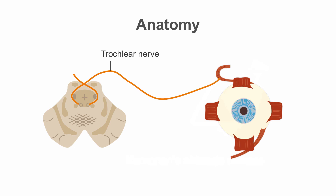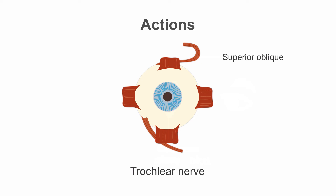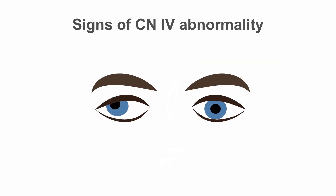The trochlear nerve, cranial nerve 4, has its nucleus in the midbrain. Its fibers cross the midbrain before exiting dorsally on the opposite side. It enters the cavernous sinus, traverses it traveling with cranial nerves 3 and 6, and exits into the orbit. It innervates the superior oblique muscle, which rotates the eye inward and, when abducted, downward. In cranial nerve 4 dysfunction the patient has an inability to gaze down and in toward the nose, and the eye is deviated upward and outward.